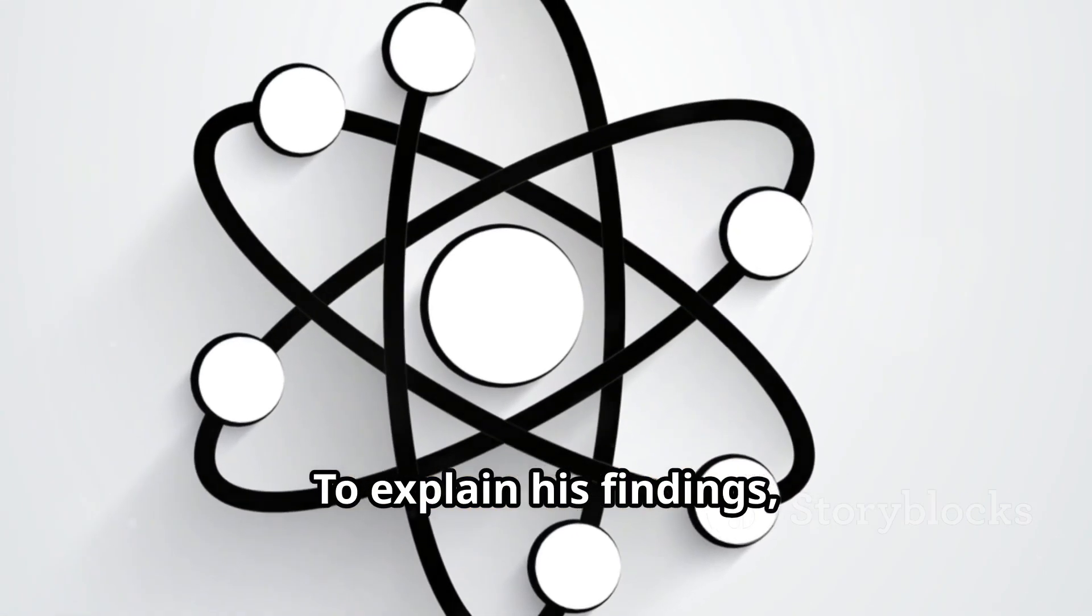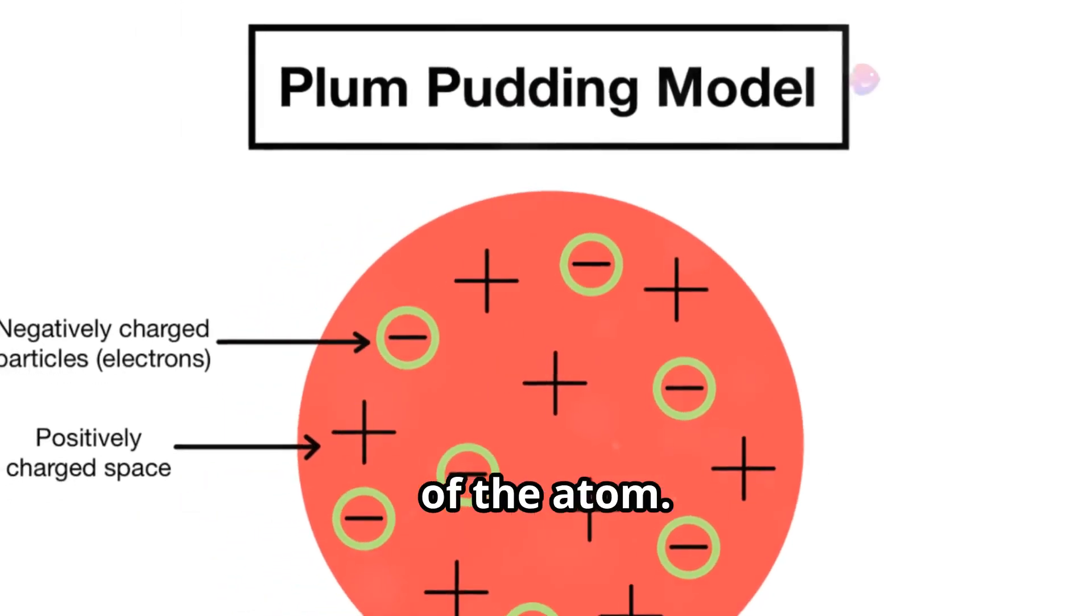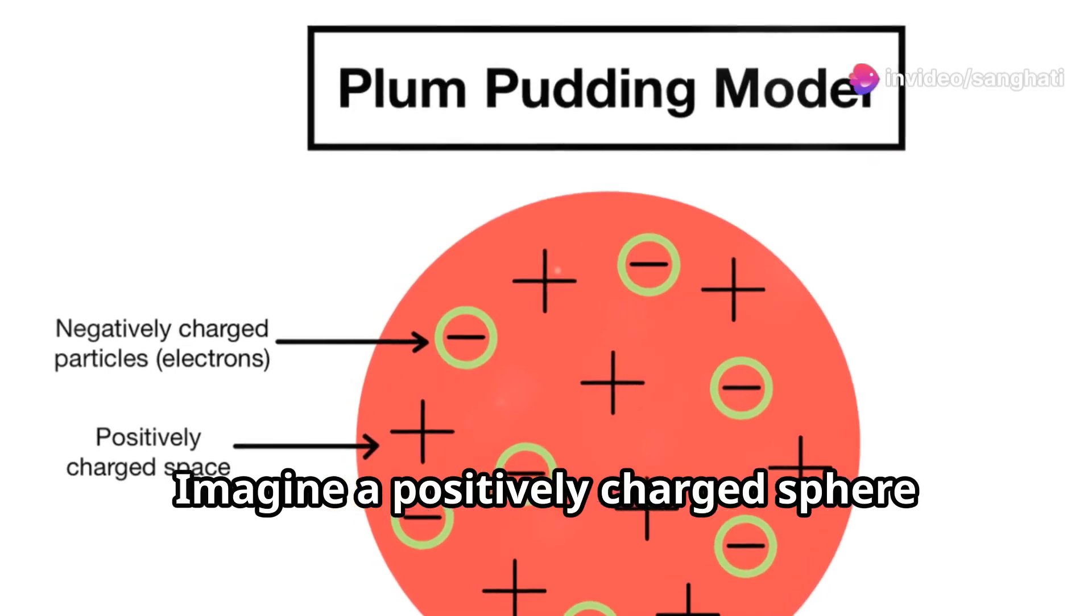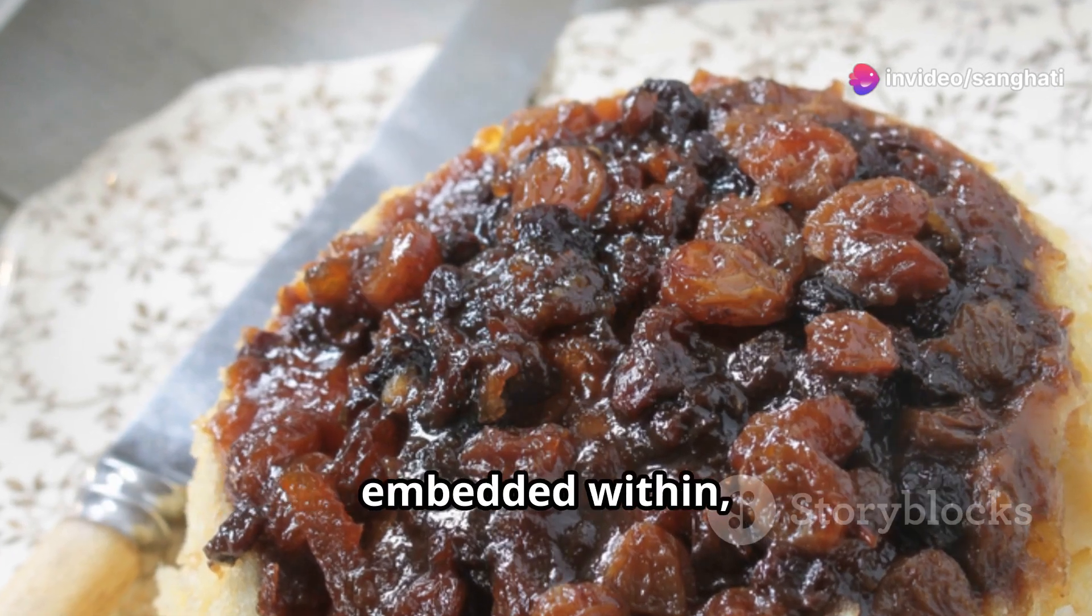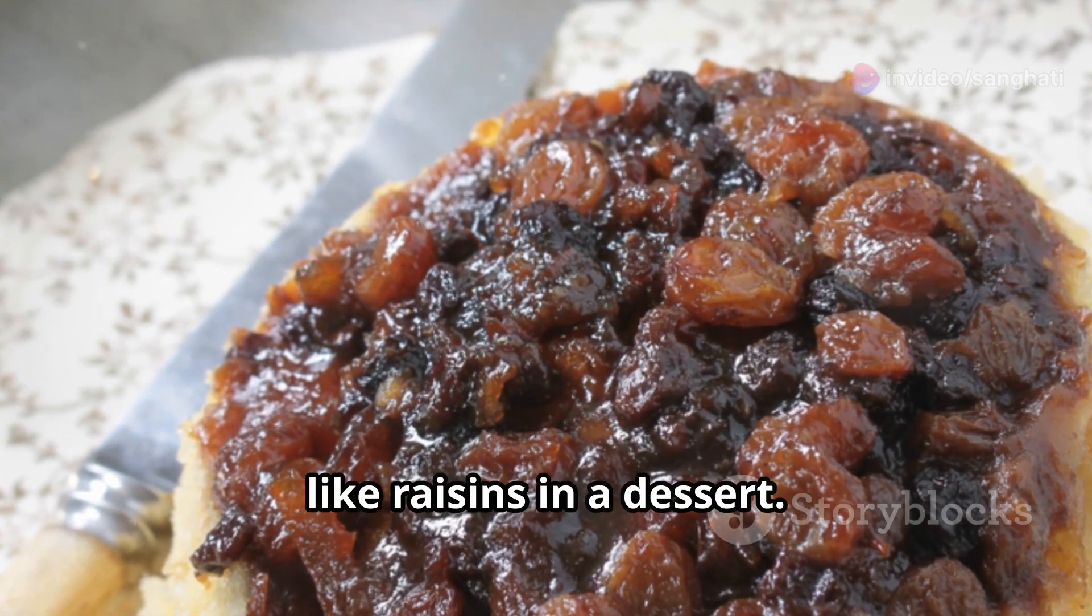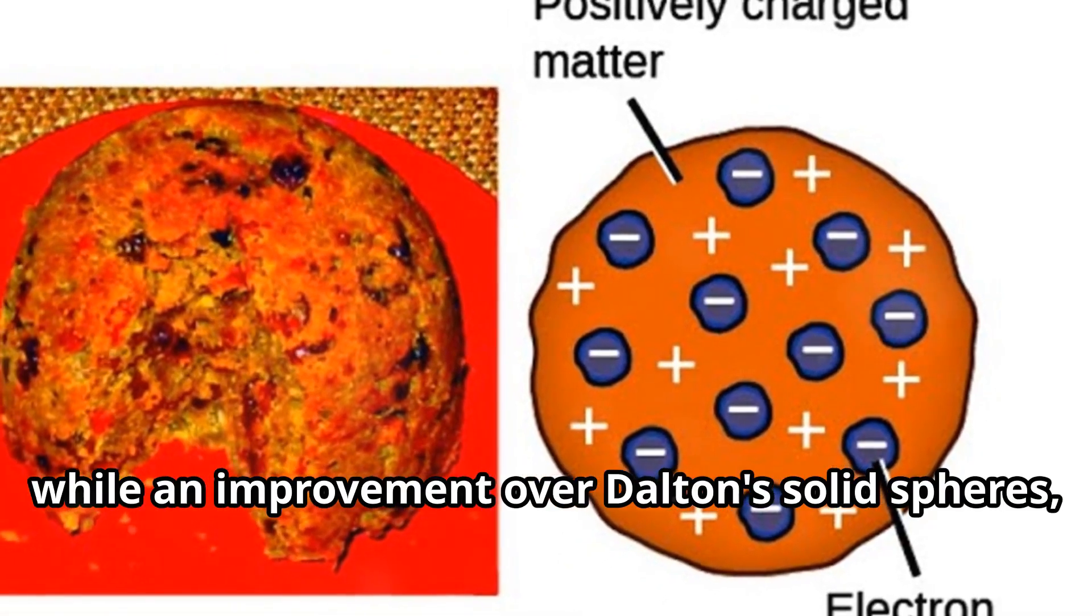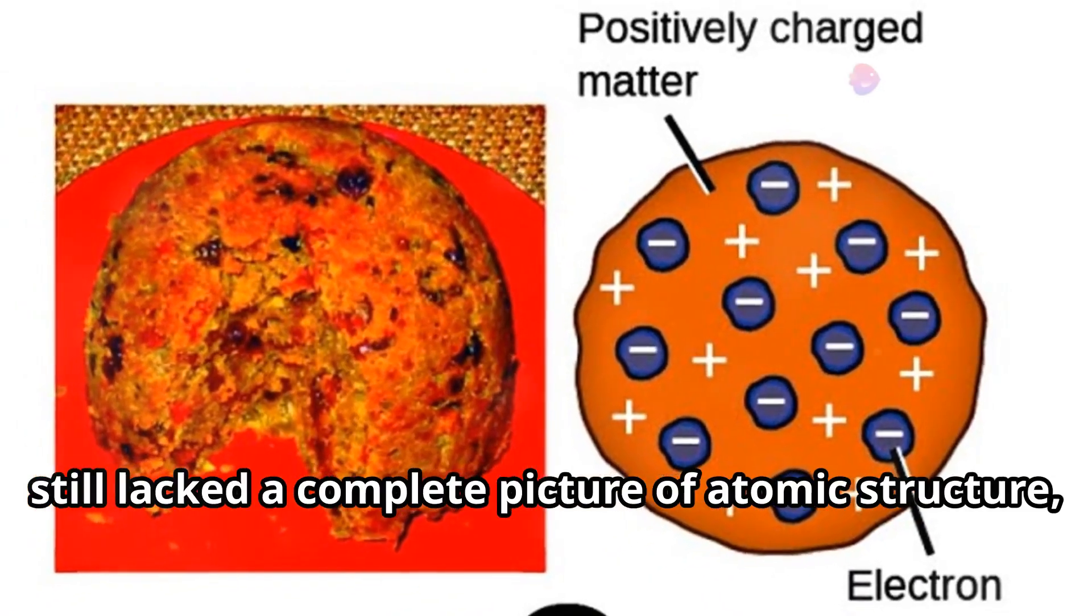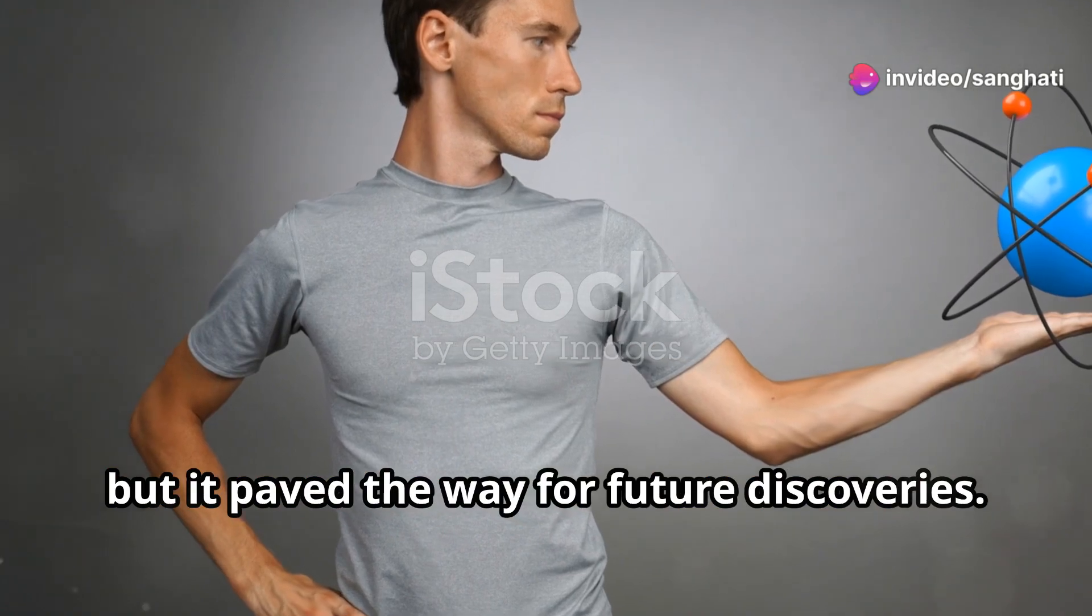To explain his findings, Thomson proposed the plum pudding model of the atom. Imagine a positively charged sphere, like pudding, with negatively charged electrons embedded within, like raisins in a dessert. This model, while an improvement over Dalton's solid spheres, still lacked a complete picture of atomic structure, but it paved the way for future discoveries.